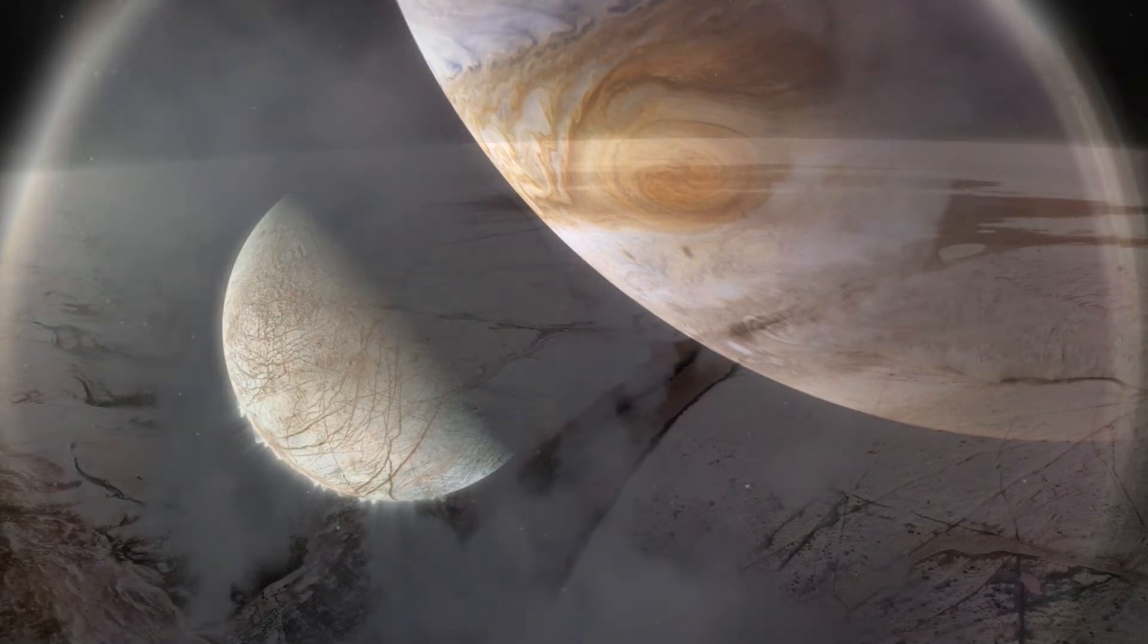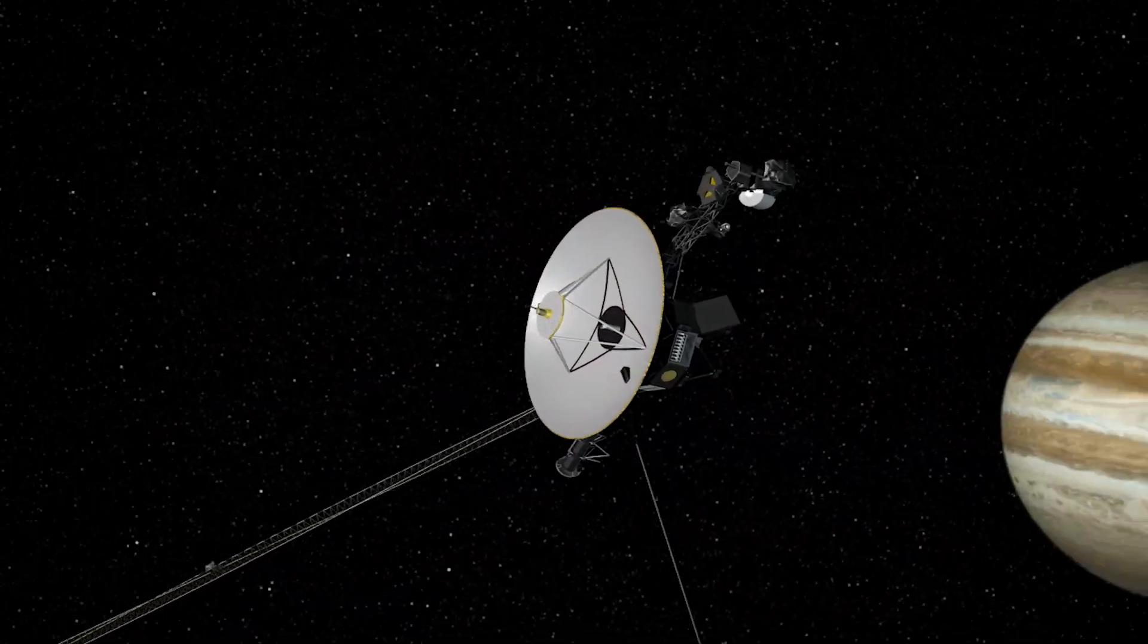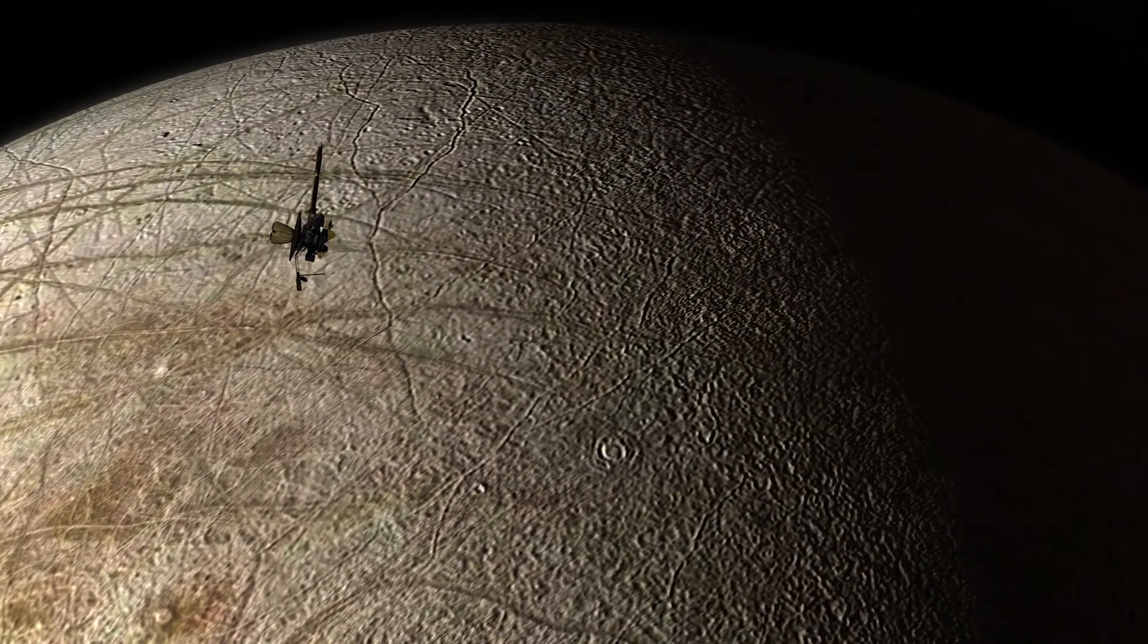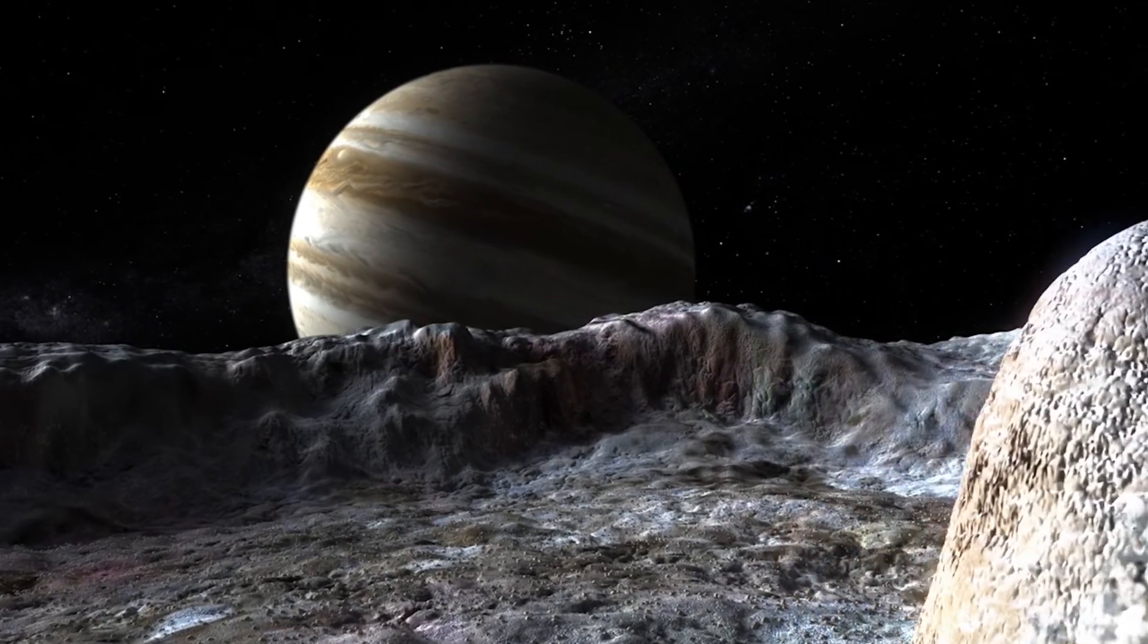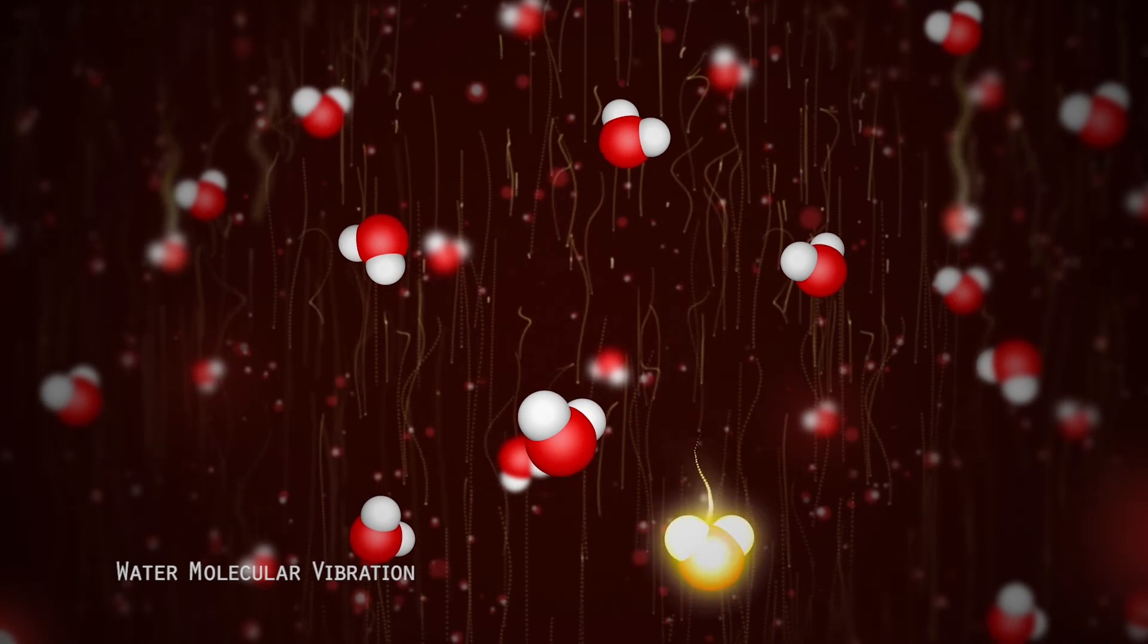Upcoming missions such as Europa Clipper, an orbiter headed for Jupiter's icy moon Europa, will provide vital information about the environments in which some form of life may one day be found. Scientists are all but certain that Europa has an ocean underneath its icy surface, but they do not know how thick this ice might be.